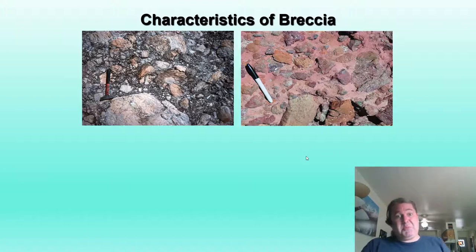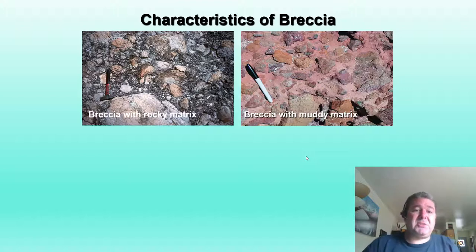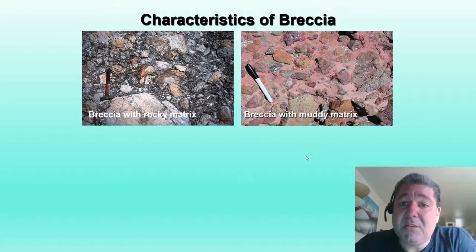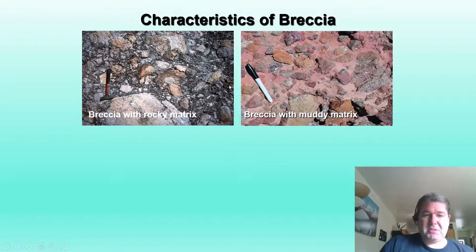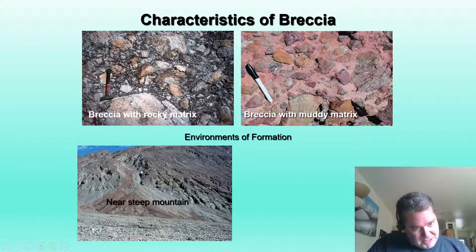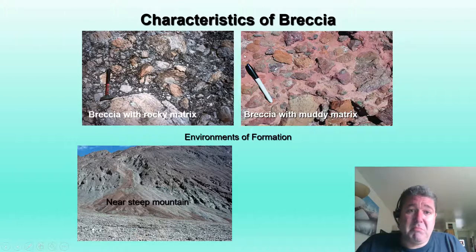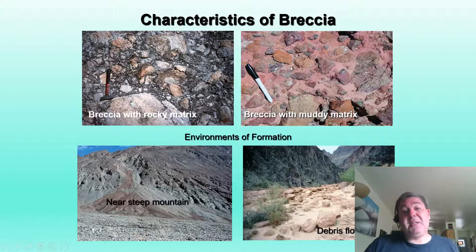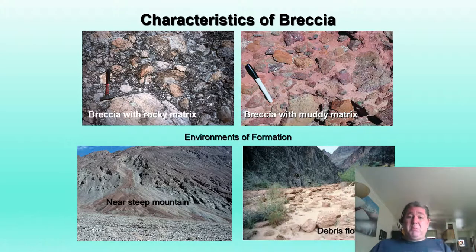Looking at breccias — cobble-sized and gravel-sized fractions with sharp edges. We can have a breccia with a rocky matrix, which may indicate something coming off a steep mountain front breaking off and coming down into an alluvial fan. Whereas a breccia with a muddy matrix, where rocks are more suspended in mud, may indicate something like a fossil debris flow — a big mudflow carrying mud, debris, and water down the mountain.